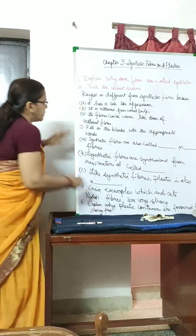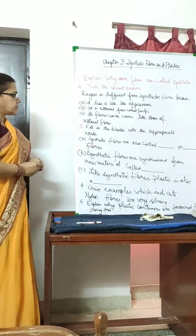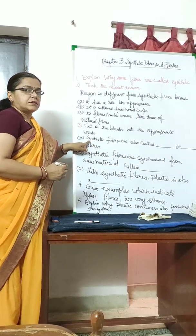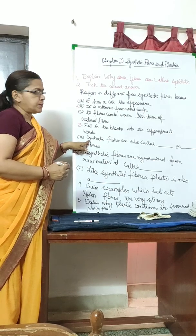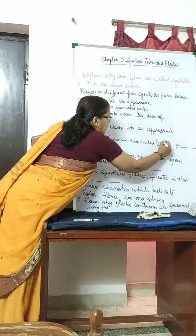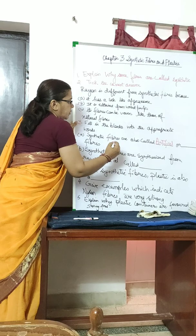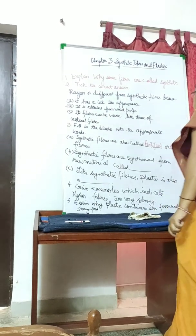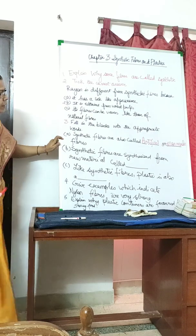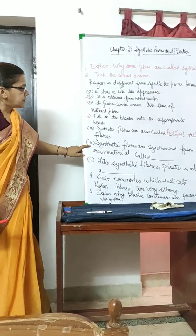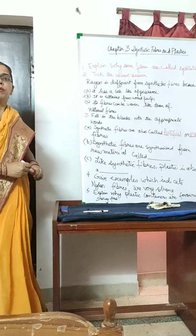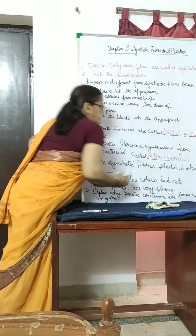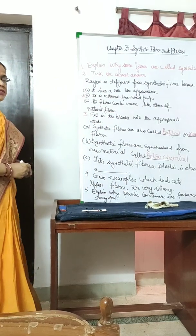Fill in the blanks with appropriate words: Synthetic fibers are also called artificial or man-made fibers, as they are not obtained from natural sources. Synthetic fibers are synthesized from a raw material called petrochemical. Like synthetic fibers, plastic is also a polymer.